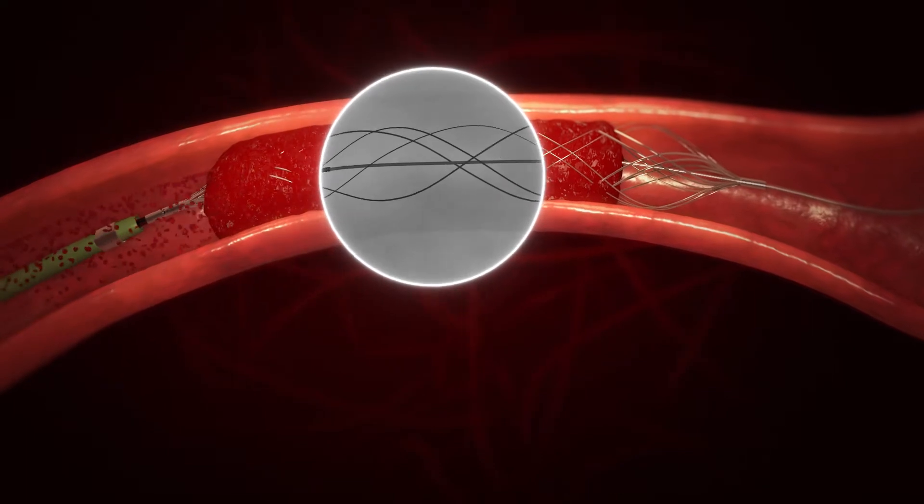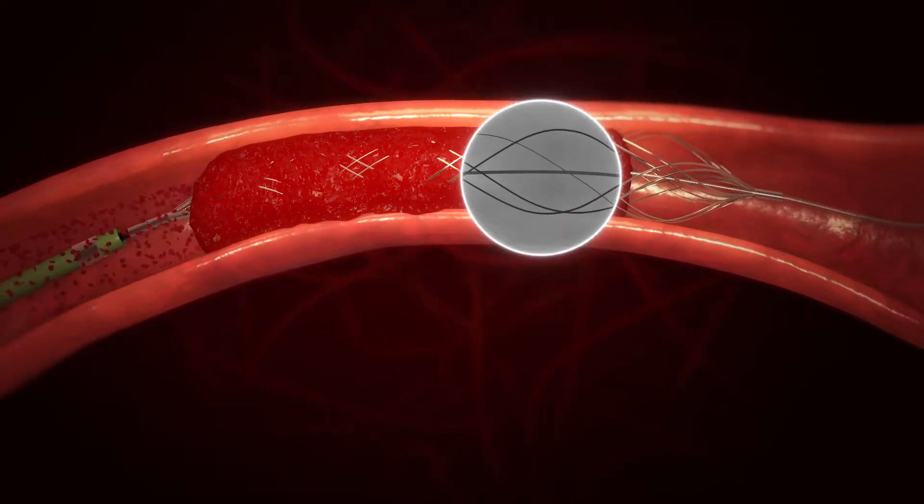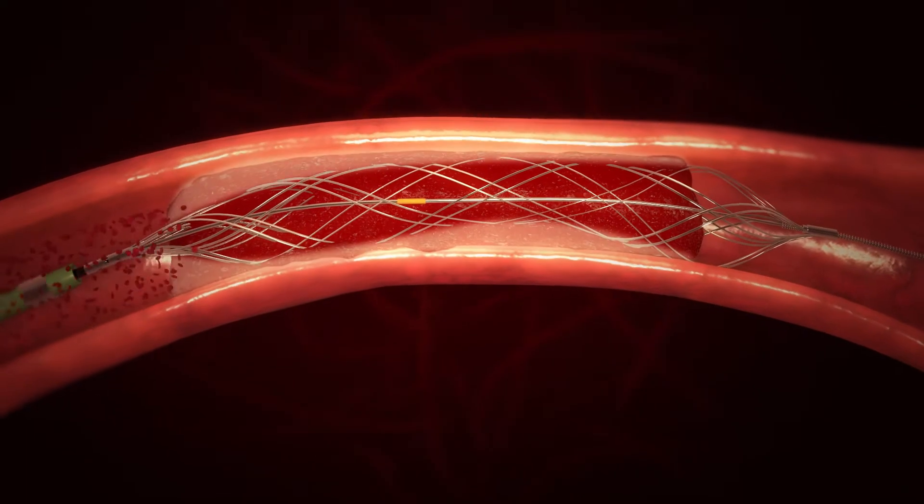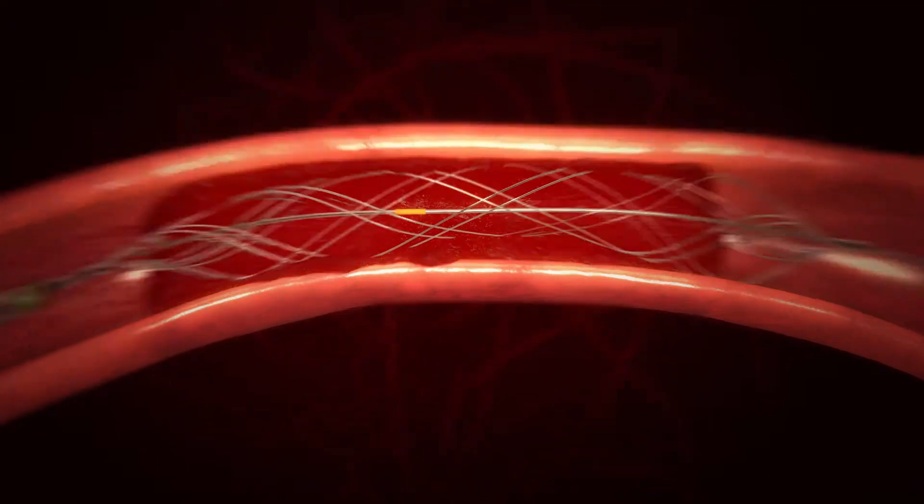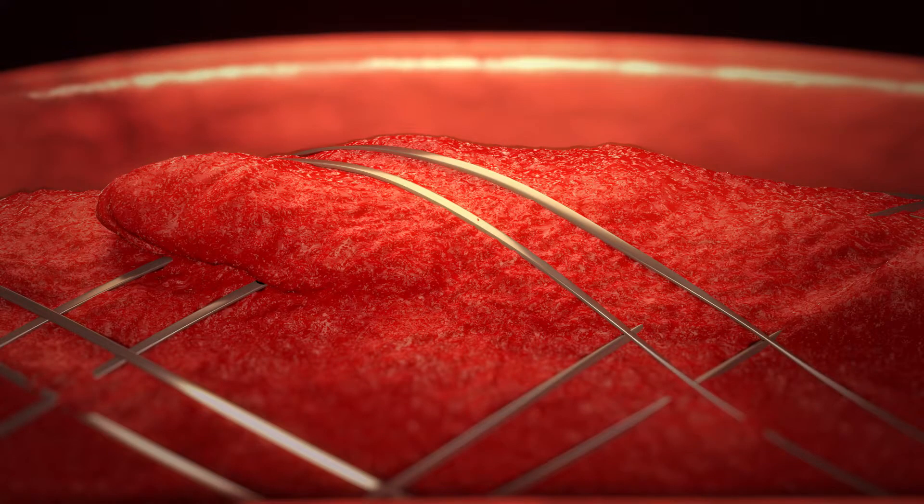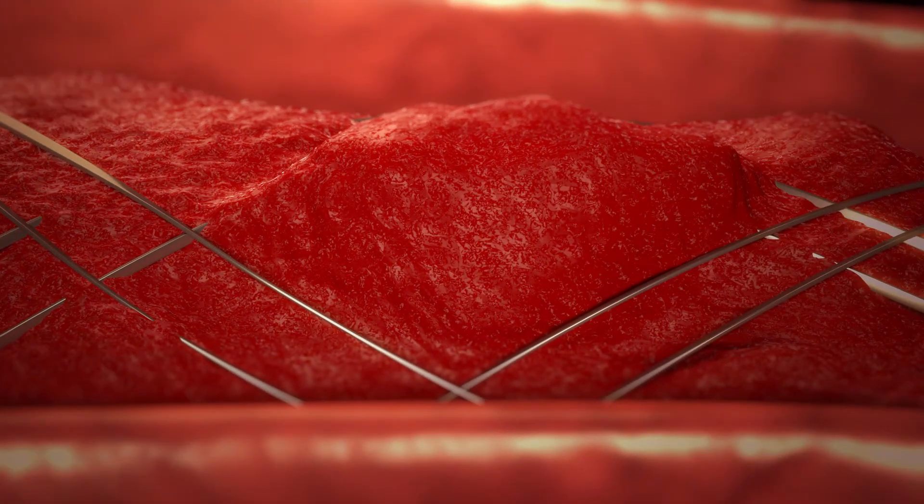The clot is contained using three complementary methods. The radial force creates friction between the clot and the braided net. Crosswire entanglement from overlapping braided wires ensnares the clot. Angle changes from the net diameter adjustments cause a pinching effect between the wires that secures the clot.